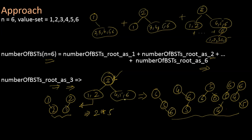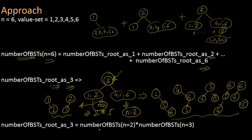These subcomputations — for 4, 5, 6 and for 1, 2 — are nothing but the number of BSTs with different values of n. That is, n equal to 3 for the right subtree and n equal to 2 for the left subtree. So the computation can be expressed as: number of BSTs with root as 3 equals number of BSTs with n equal to 2 multiplied by number of BSTs with n equal to 3.